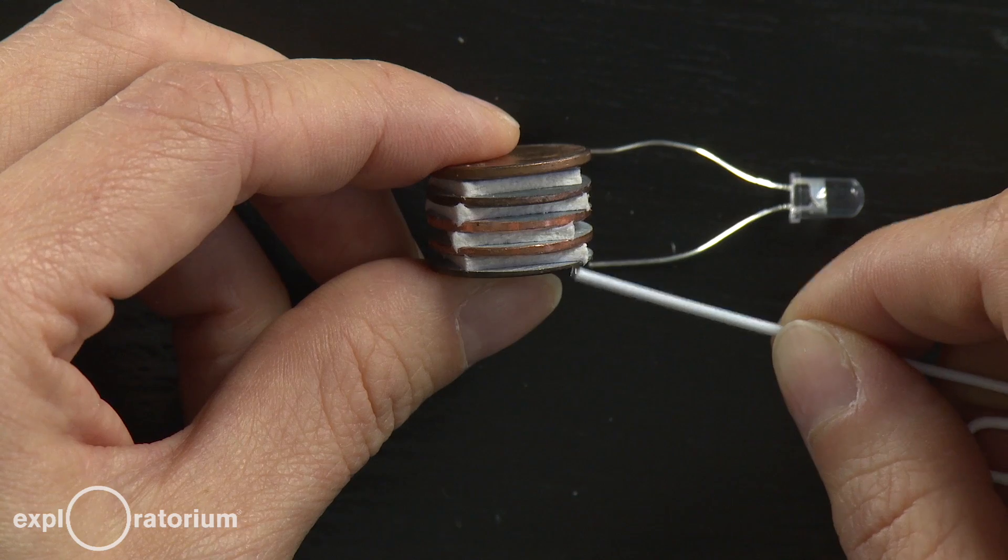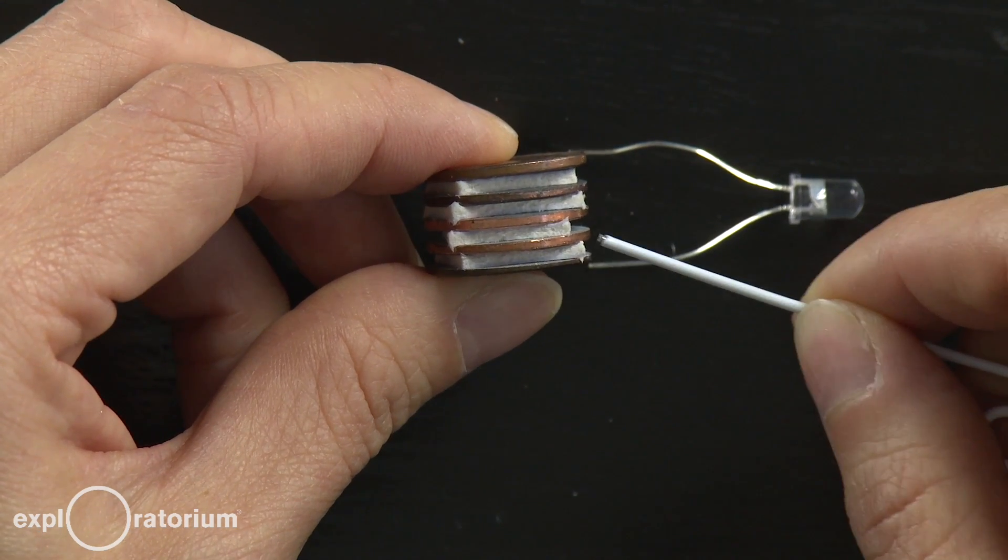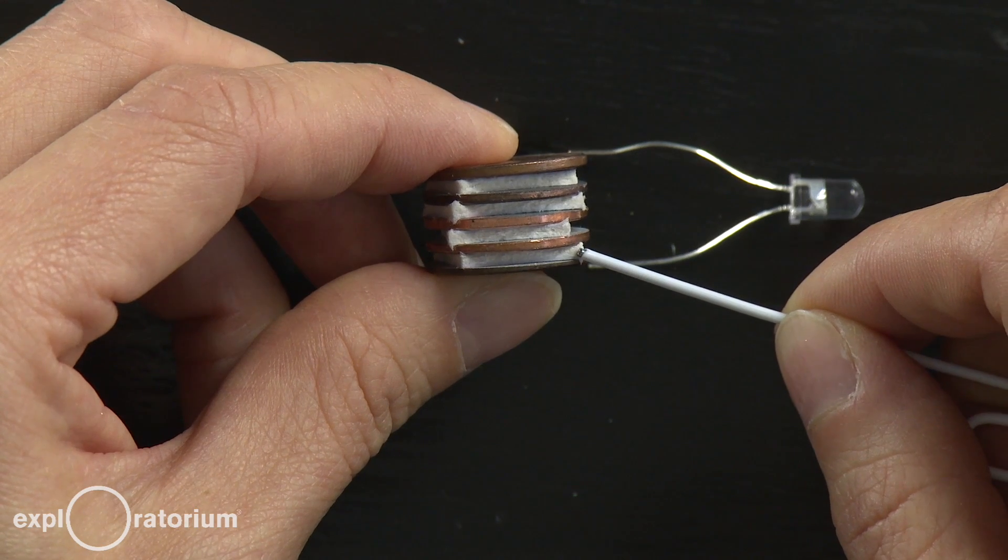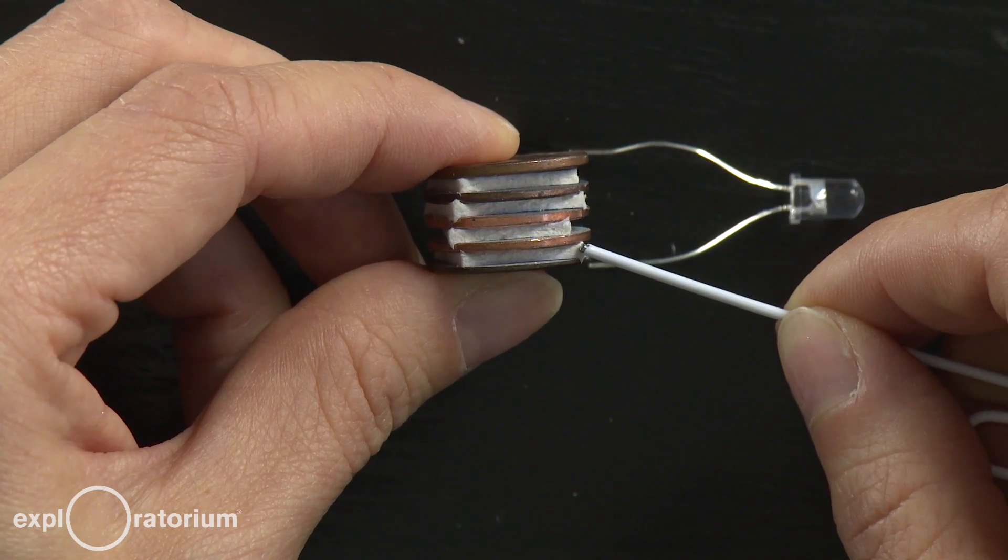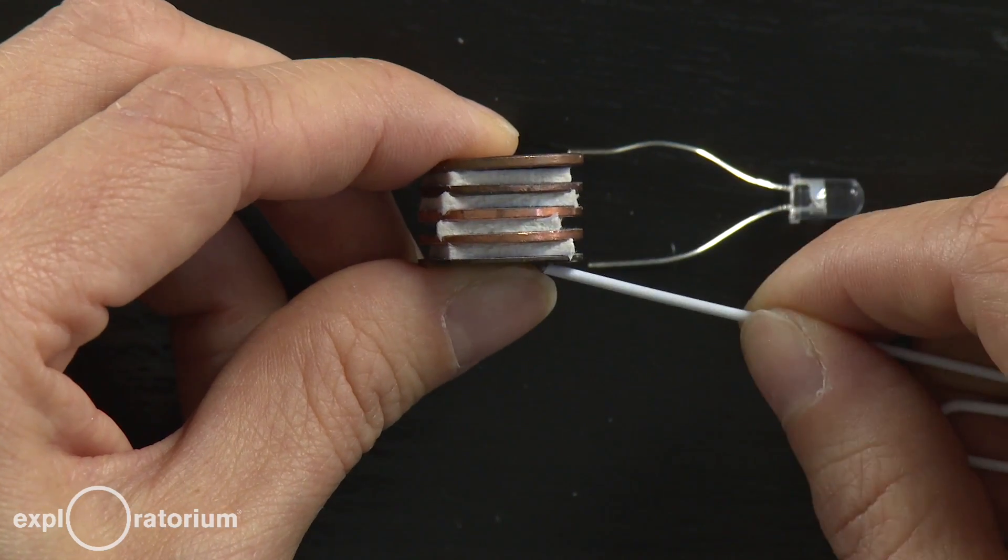On the surface where the zinc is in contact with the salt water, there's a reaction that creates electrons. And on the surface where the copper is in contact with the salt water, there's a reaction that uses electrons.